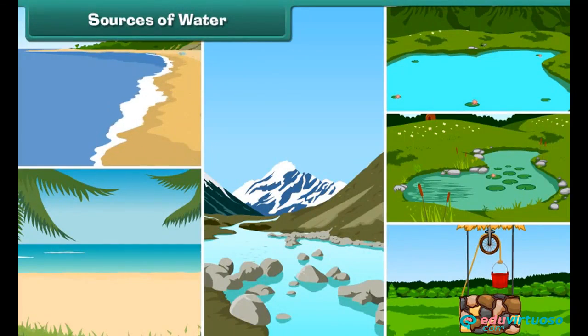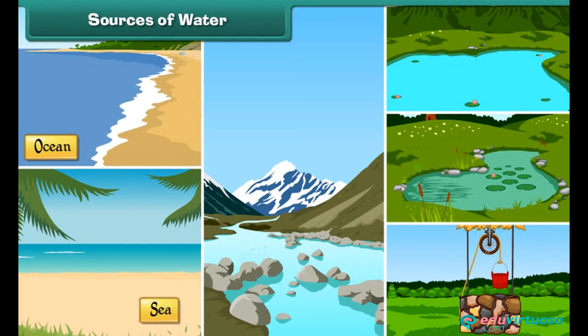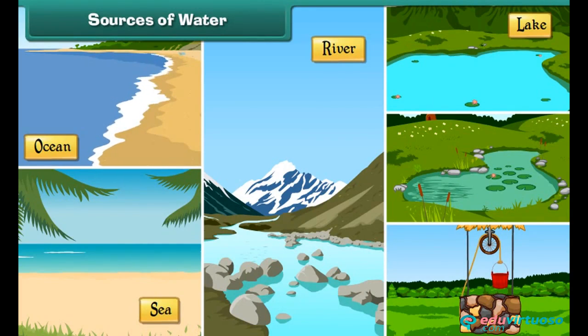Oceans, seas, rivers, lakes, ponds, and wells are sources of water on earth.